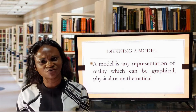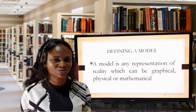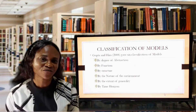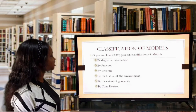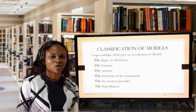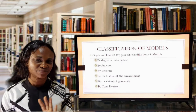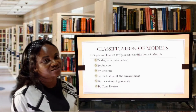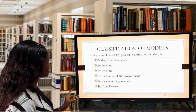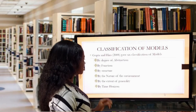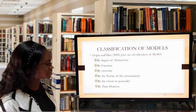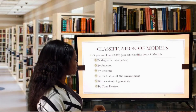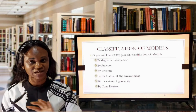There are several forms of modeling that we are going to be examining in the course of this lecture. I have adopted a classification according to Gutta and Hira. Gutta and Hira have six basic classifications of models: the first is by degree of abstraction, the second is by function, the third is by structure, the fourth is by the nature of the environment, the fifth is by extent of generality, and the sixth is by the time horizon.